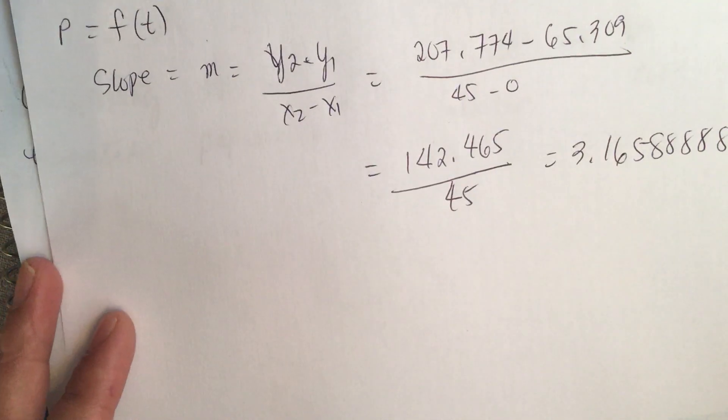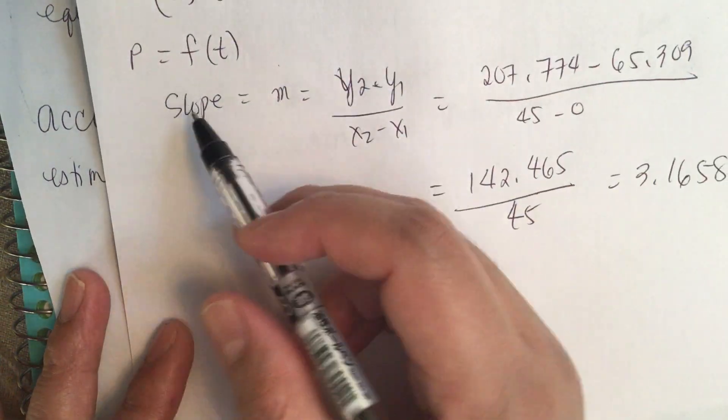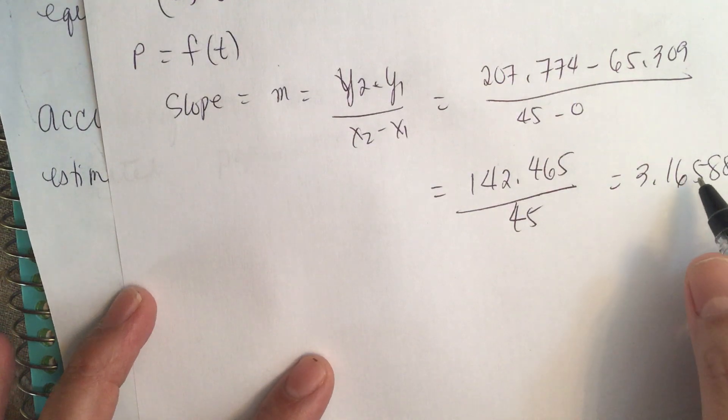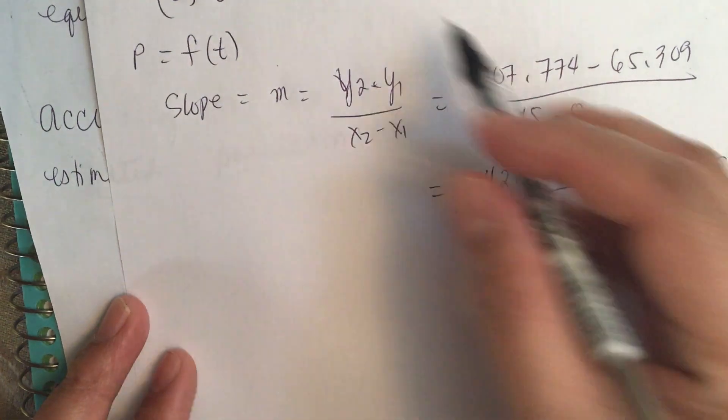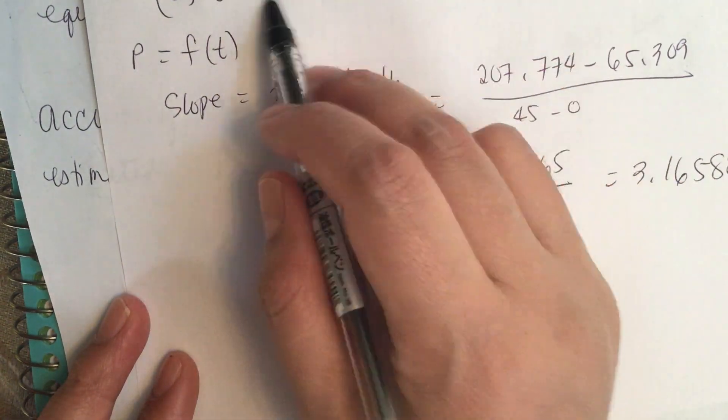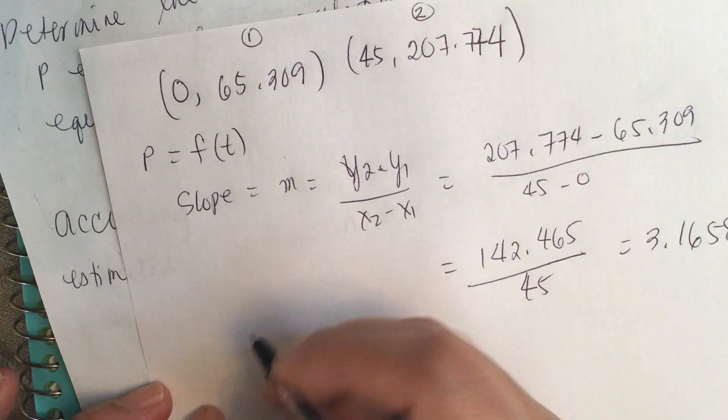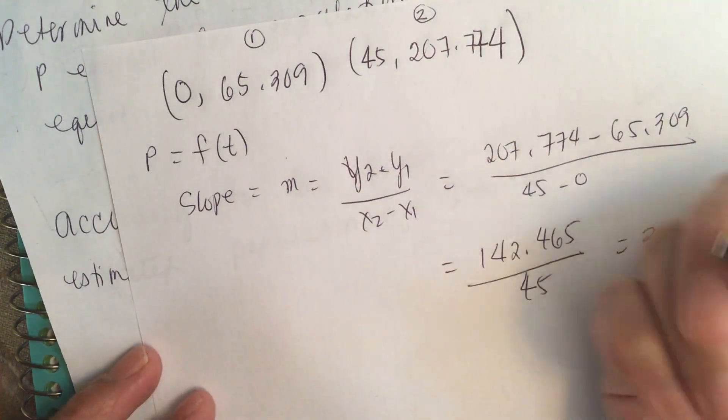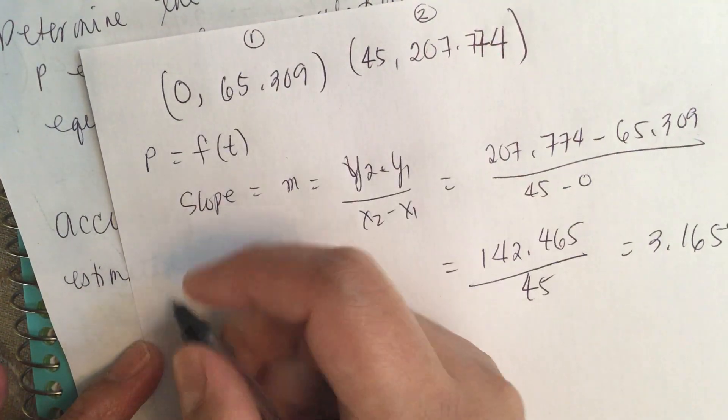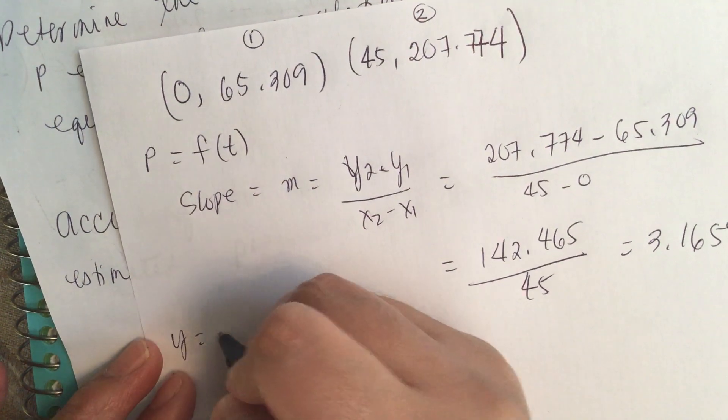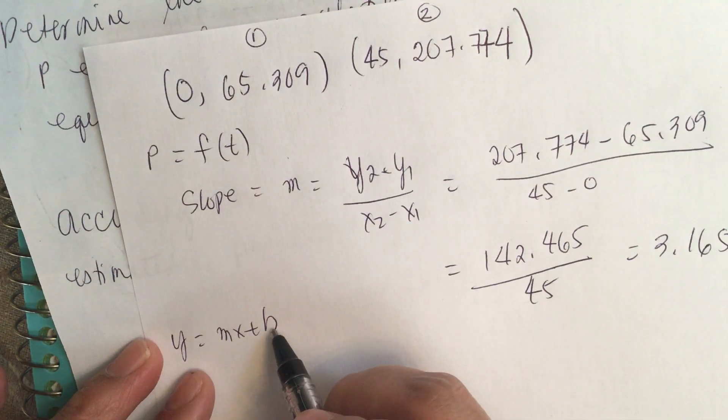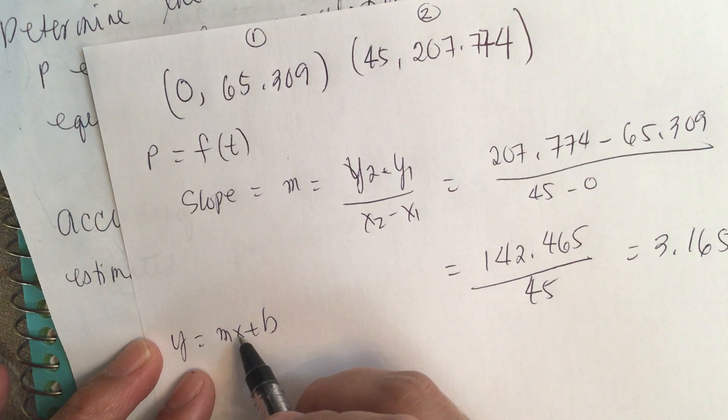Now we have to find the Y-intercept. We can choose any of these two points. The general equation of the linear function is Y equals MX plus B, where B is the Y-intercept and M is the slope.